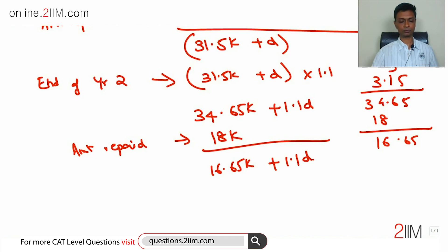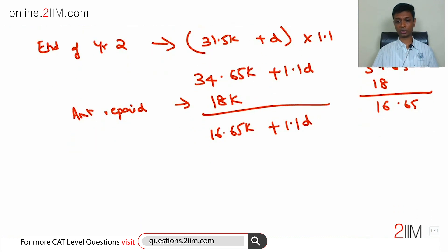So he has to pay 16.65k plus 1.1D, but he does not pay this off. He again keeps it open for one more year.